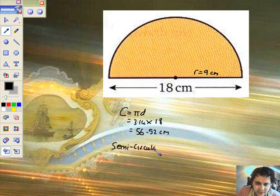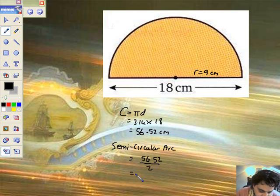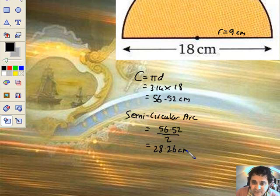So I want to call it semicircular arc. Now this is a great big arc, isn't it? It's only a bit of a circumference, but it's half a bit of a circumference. So I can call it semicircular arc. That's going to be 56.52, the whole circumference, and divide it by 2. So let's just get a mark for dividing by 2, and that's 28.26, and we're still in centimetres.